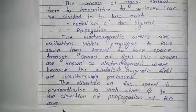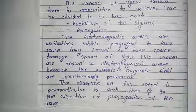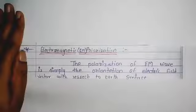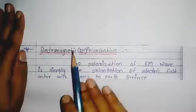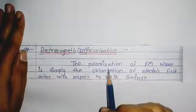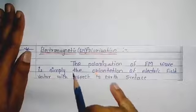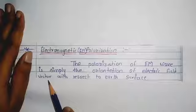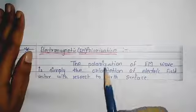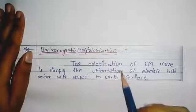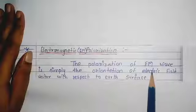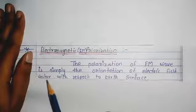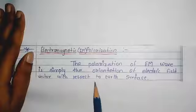The second topic is electromagnetic polarization, also called EM polarization. The definition is: the polarization of an EM wave is simply the orientation of the electric field vector with respect to the earth's surface.